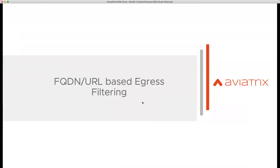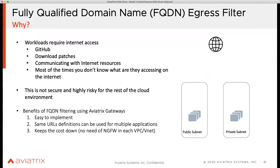Now let's talk about FQDN egress filtering. So let's take a look at the problem statement here. What happens when you start building your applications and virtual machines — pretty much every virtual machine or instance will have this requirement to go out to the internet and pull something. This is how modern applications are written. These microservices applications, or even traditional applications, need to connect to the outside world.